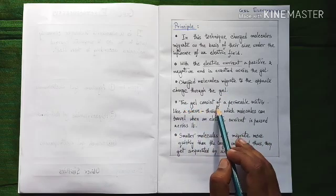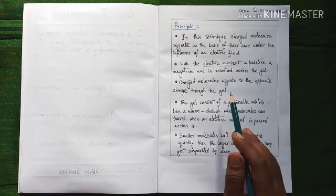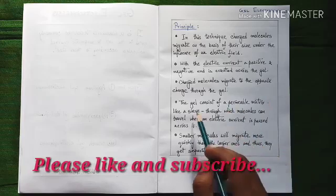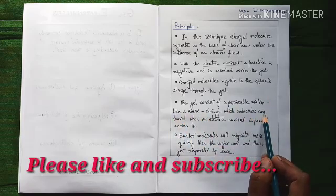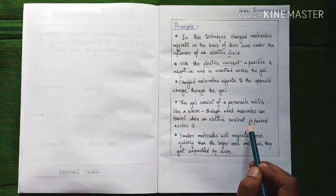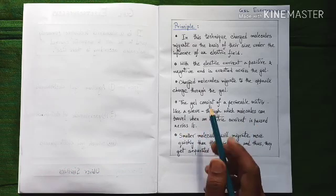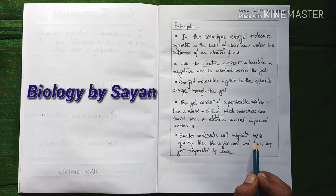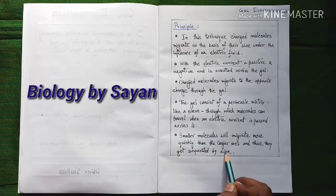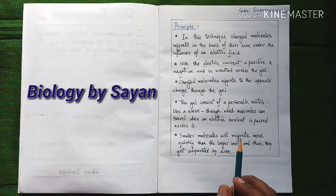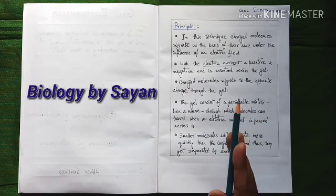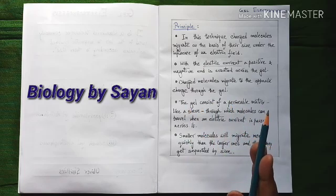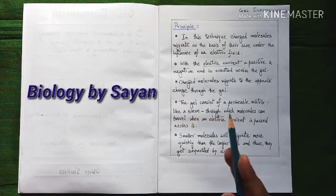The gel consists of permeable matrix, as I have earlier mentioned, like a sieve through which molecules can travel when an electric current is passed across it. And the last point but not the least, smaller molecules will migrate more quickly than the larger ones and thus they get separated by their size. So remember always, students, in gel electrophoresis the charged particles will always get separated from each other by their size, not by their charge.